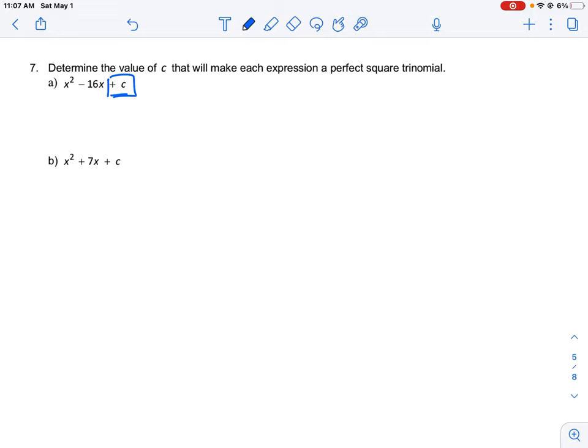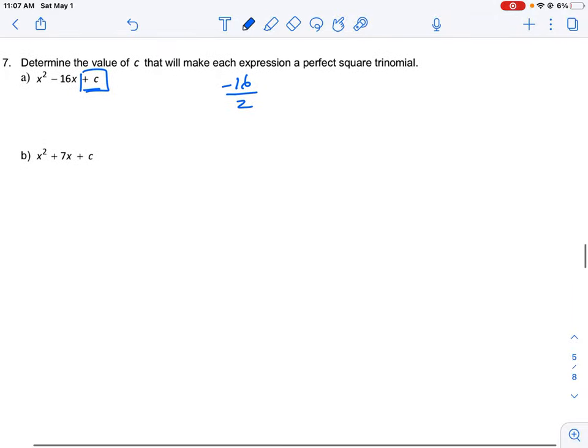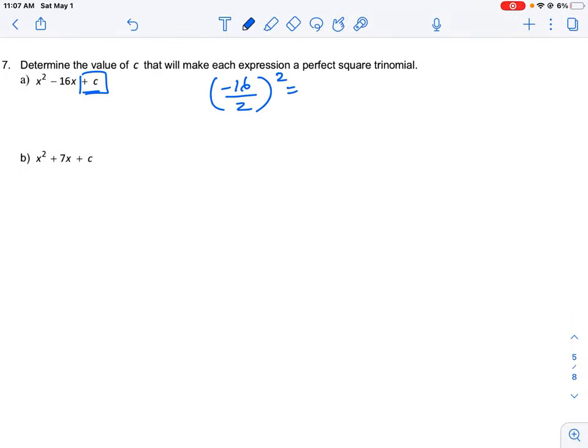So what we know is that if whatever this value is c, if we take half of the middle term and then square it, so the middle term here is negative 16. So if we divide that by 2, that's going to give us a negative 8, but then if we square that term, that will give us, let's just write it out in full here, that will give us 64. So the question is, would 64 be the number that would go in for the letter c? So what we could do is we can just try it.